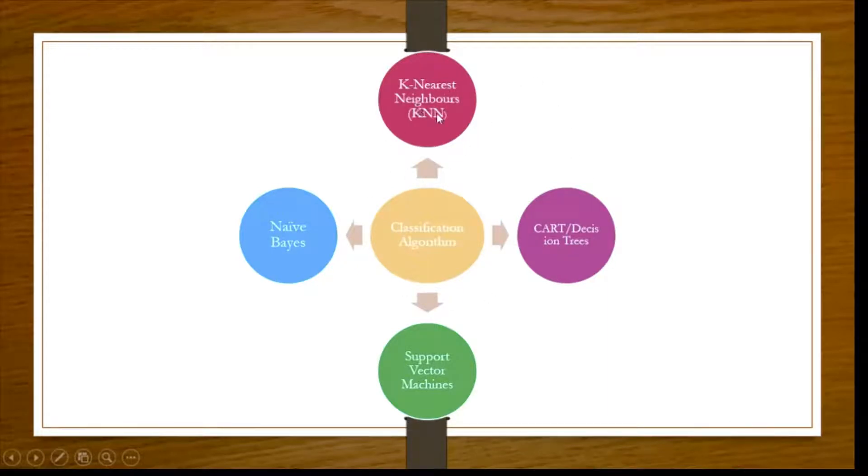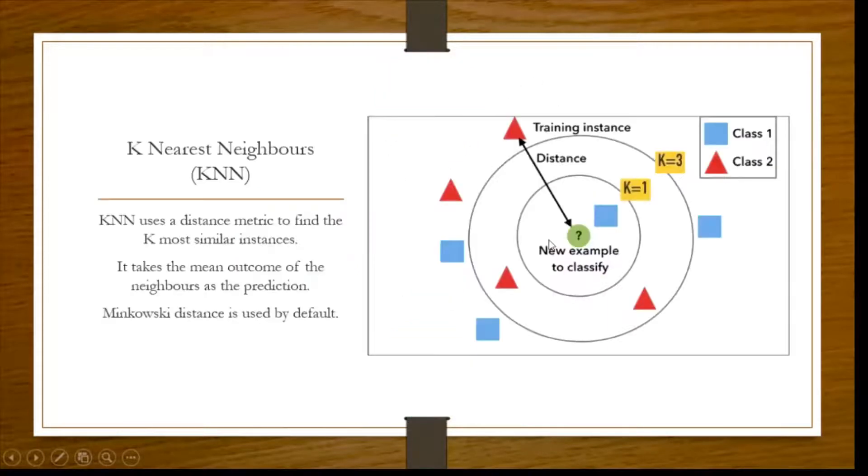First is KNN, that is K nearest neighbor. This uses a distance metric and by default it is Minkowski. Now you understand this: suppose you are given a new example. Now you have to classify to which class this will fall, either in the class 1 square or the triangle class 2. What happens is it takes the distance depending on this K.